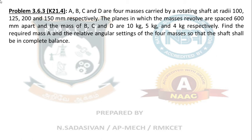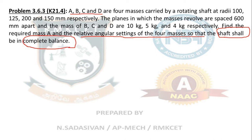No theta is given in the question. One important thing to note: all 4 mass values, radius of rotation, and spacing for B, C, D are given, but one mass is unknown. An important word to look at here: find the relative angular setting of the 4 masses so that the shaft shall be in complete balance — which means the system by itself is in balance. You do not have to put a balancing mass. If the question carries the word 'complete balance,' I will point it out when it is important.